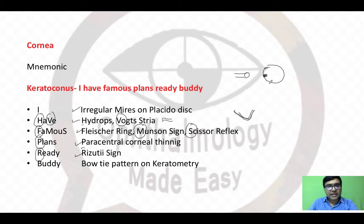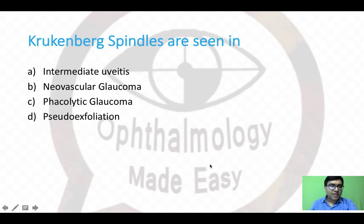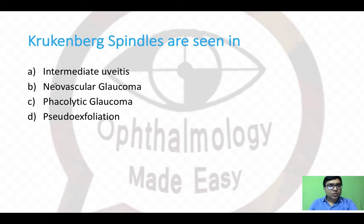Rizzuti sign: when you shine light on the temporal limbus (the boundary of cornea with sclera), normally you cannot see more than one third of the iris, but in keratoconus, due to a deep anterior chamber, you can see more than one third of the iris. The final letter B stands for bow tie pattern on keratometry.